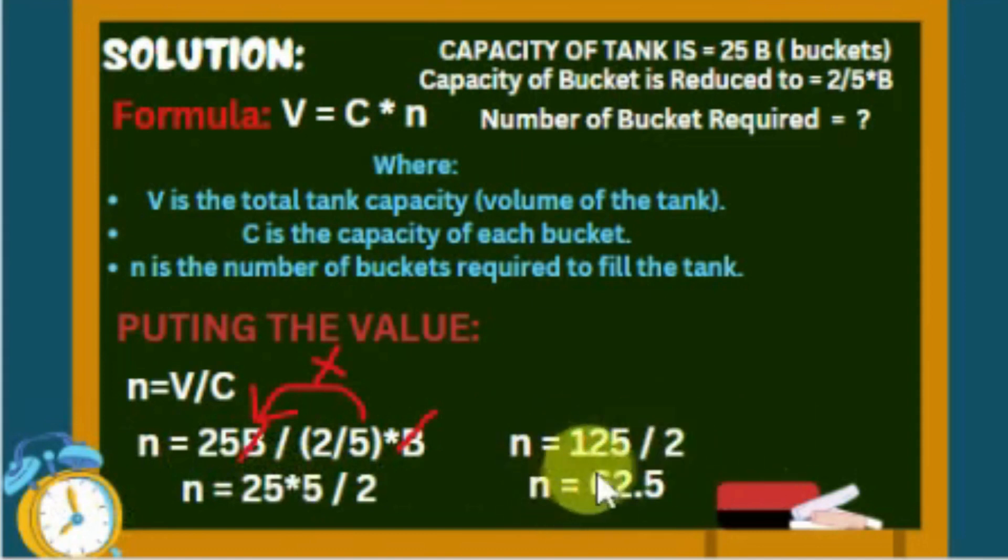Using fundamental rules of math, now 125 divided by 2, which is equal to 62.5. That's it, that's our answer.